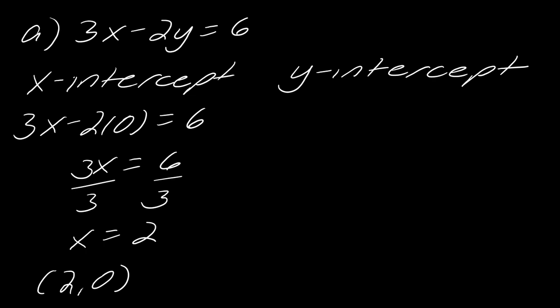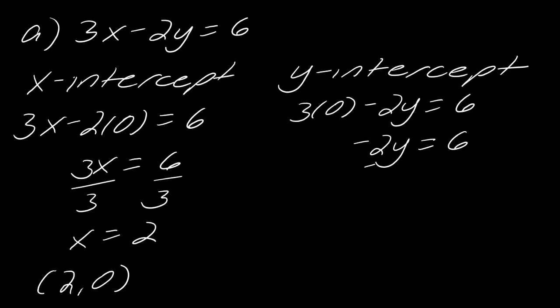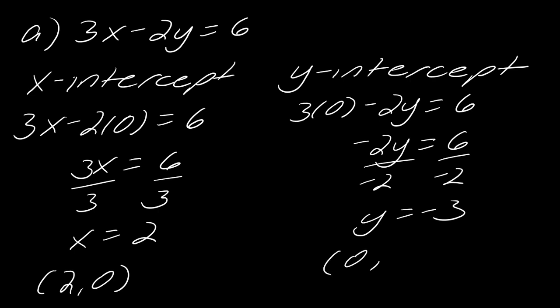Now let's pivot to the y-intercept. We basically flip-flop: plug in 0 for x and then solve for y. We're left with negative 2y equals 6; divide both sides by negative 2 and we get y equals negative 3. So the point is (0, negative 3). Sometimes people try to take this x-coordinate and this y-coordinate and mash them together into one point — that's not what the intercept is. These are two separate points, each with zero in part of the coordinate.